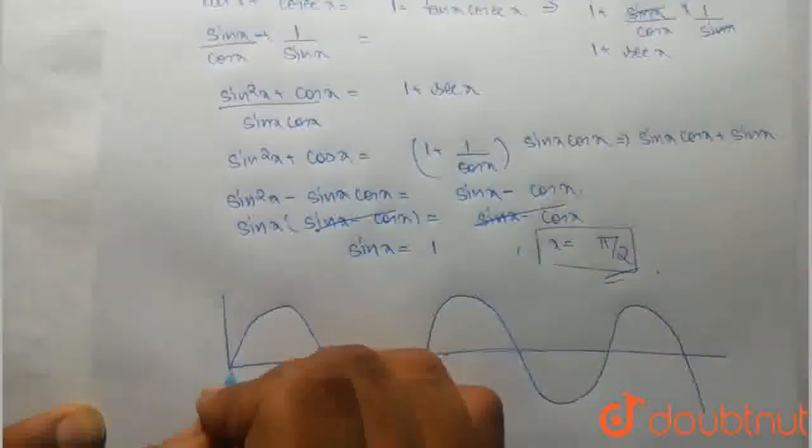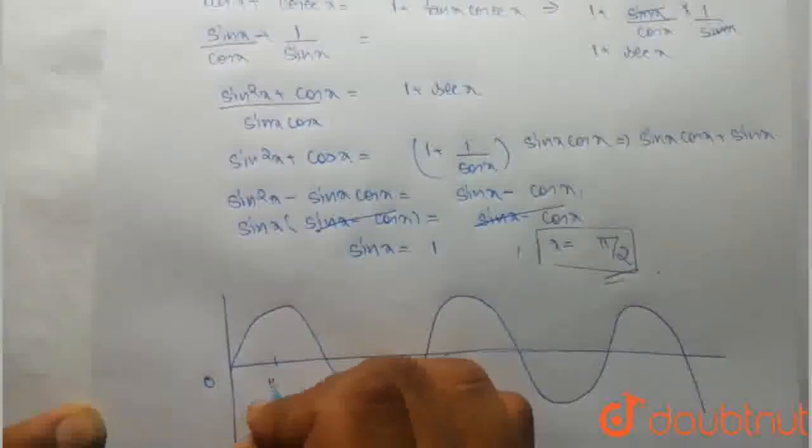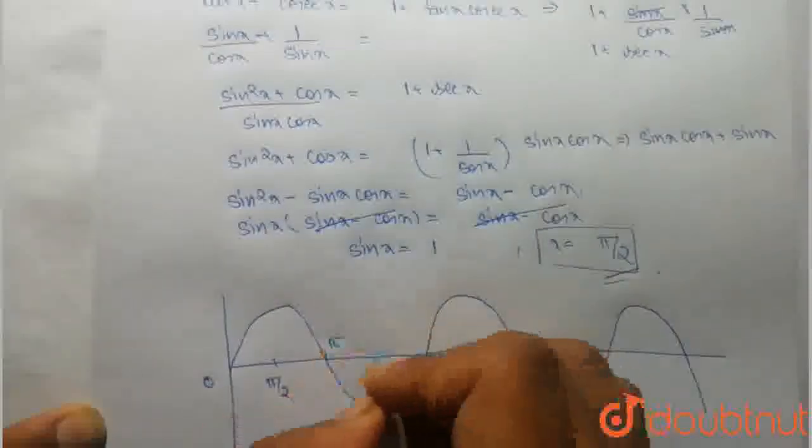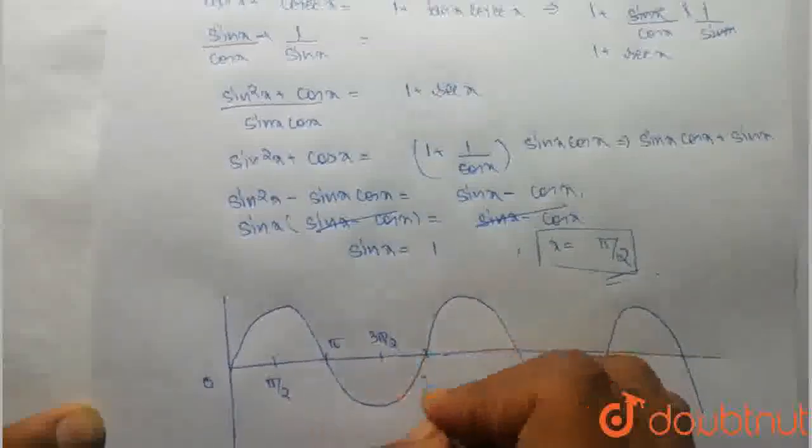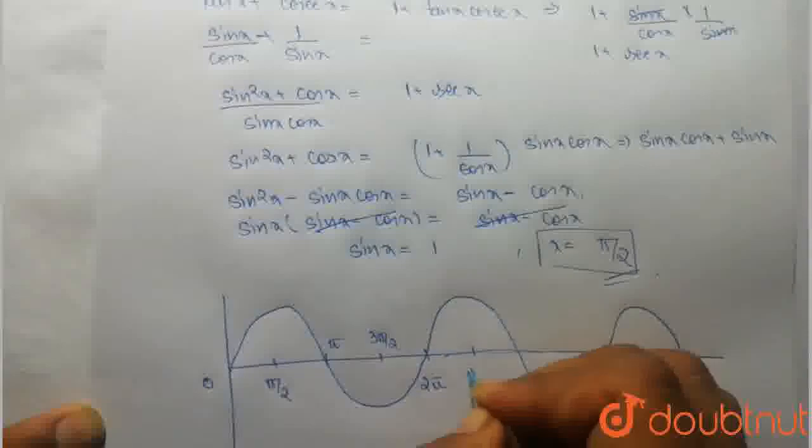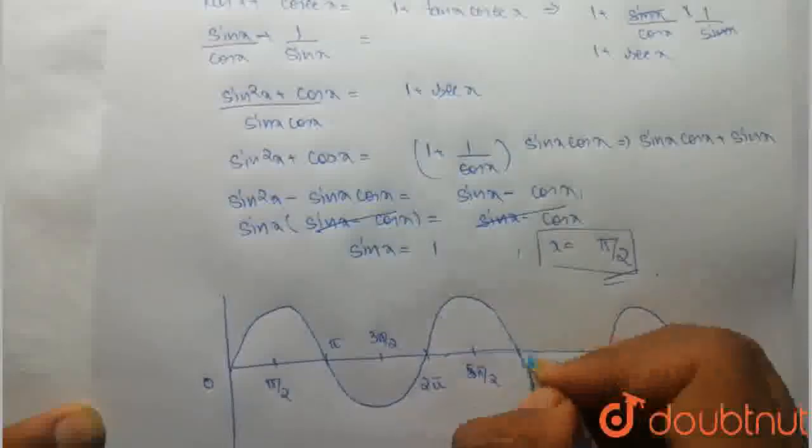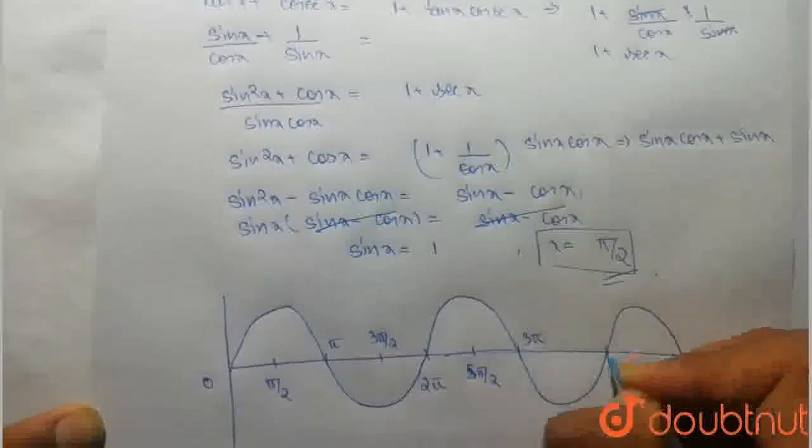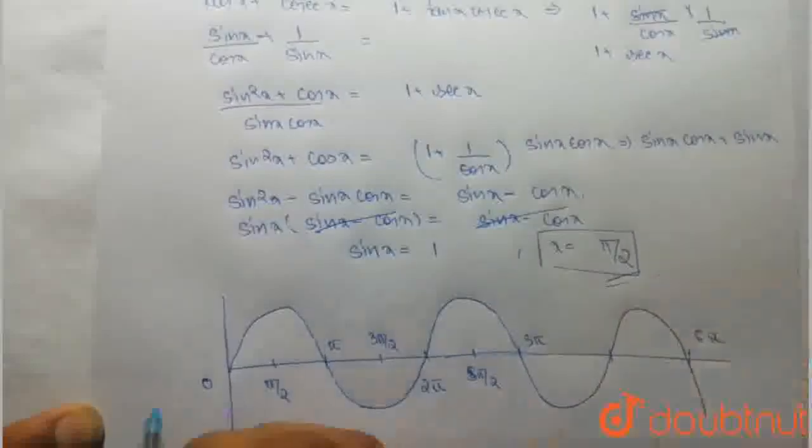And so on. This is 0, this is π by 2, this is π, this is 3π by 2, 2π, 5π by 2, 3π, and so on. And this is 5π.